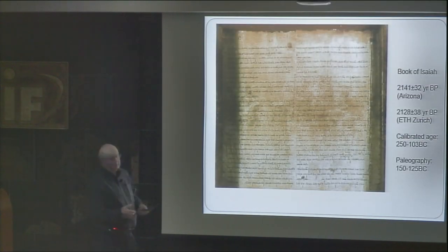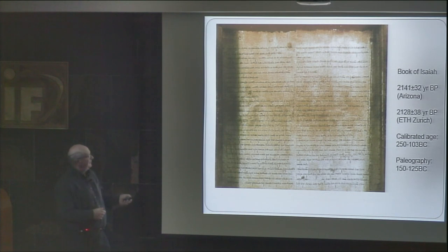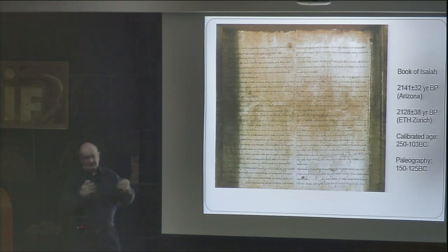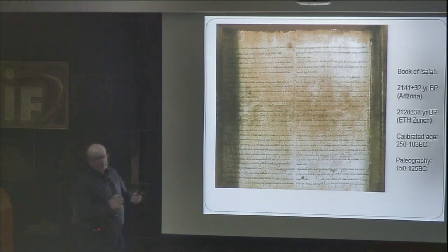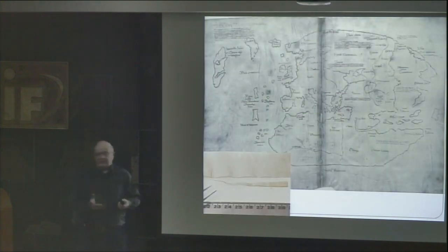Going back to dating: we measured a sample from this Isaiah scroll — the radiocarbon age was 2,140 BP, giving a calibrated age of about 150 BC. Zurich also measured a similar sample and got exactly the same result. If you ask somebody who can identify the time period by the style of the writing, they would put it at about 150 BC. So all these values agree.